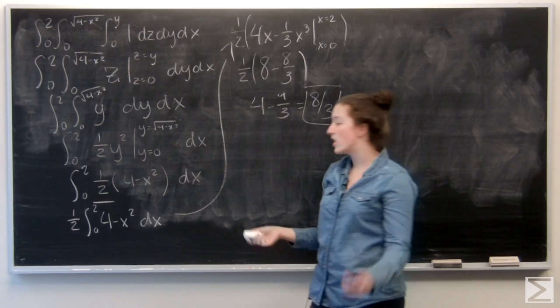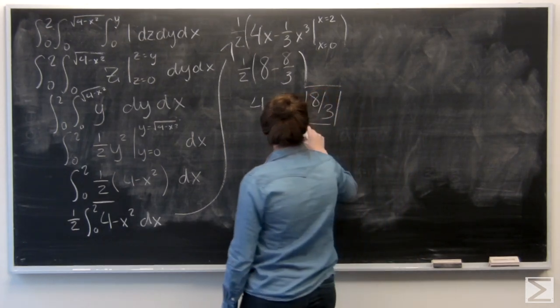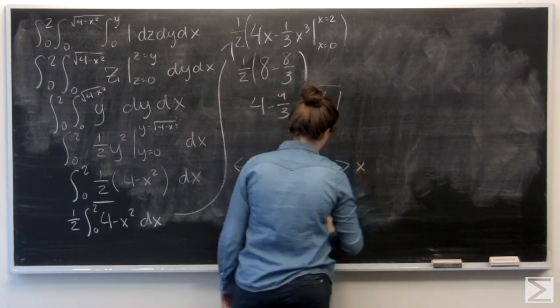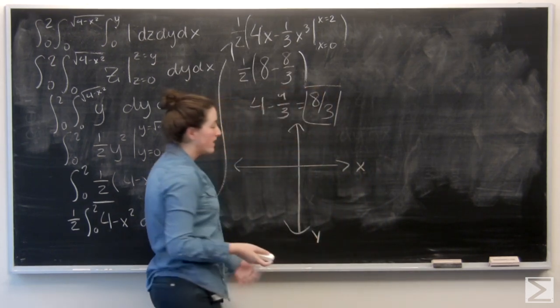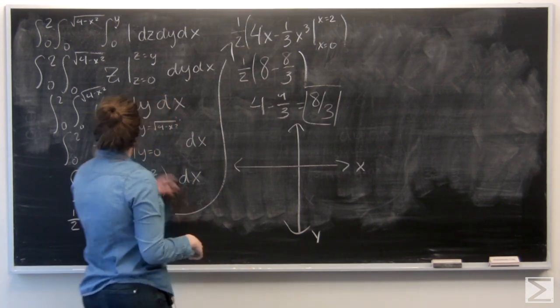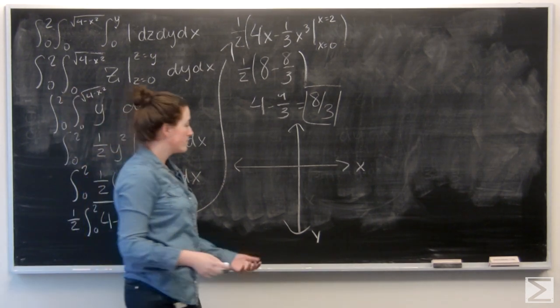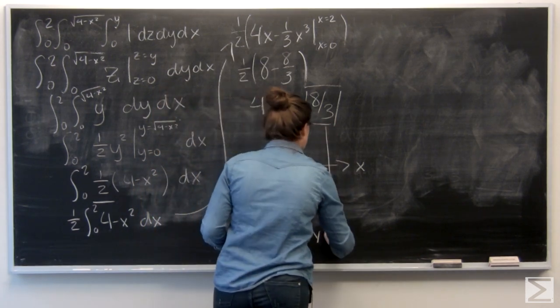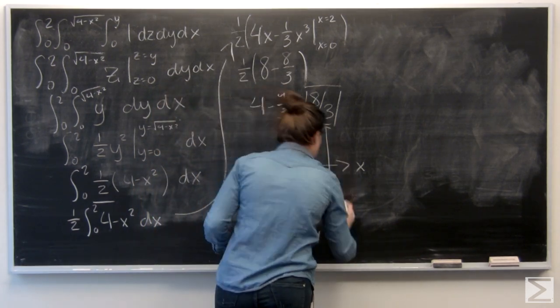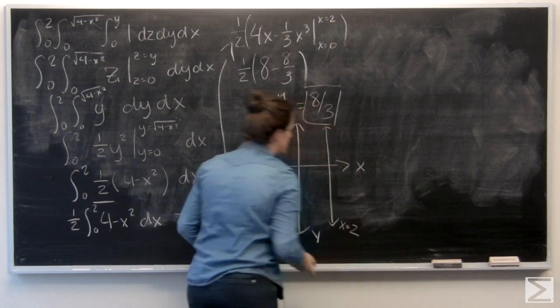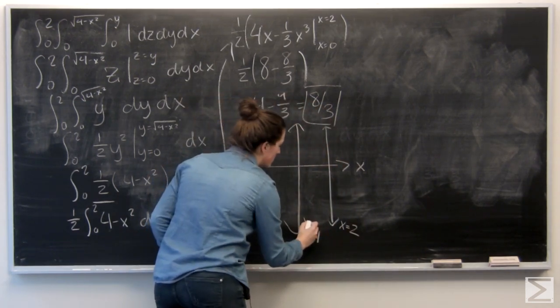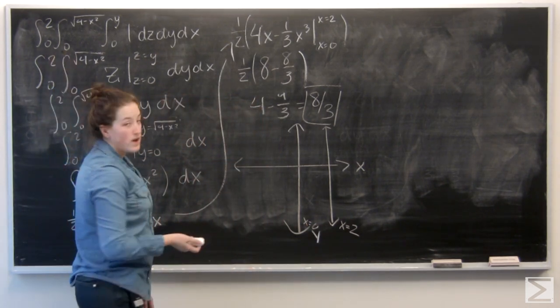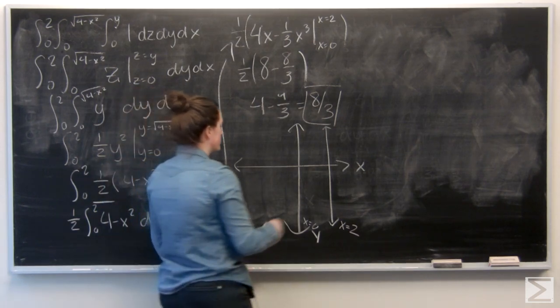The next step is to project it into R2. So, let me draw my xy plane. Now, I just want to look at my xy bounds. So, for x I've got from 0 to 2. So, x equals 0 to x equals 2. Now, let's look at y. So, my lower bound for y is y equals 0, the x axis.